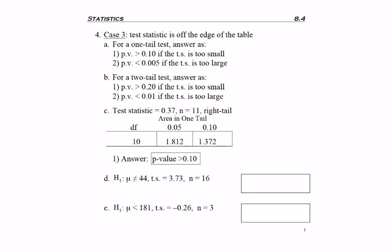So example C. The test statistic I'm looking for is 0.37, n equals 11, and I have a right-tailed test, which really tells me that I have a one-tailed test. So I go to row n minus 1, which for us would be row 10, and I'm looking for the number 0.37. Well, I'm reading along the edge of the table, and I see 1.8-something, which is too big,